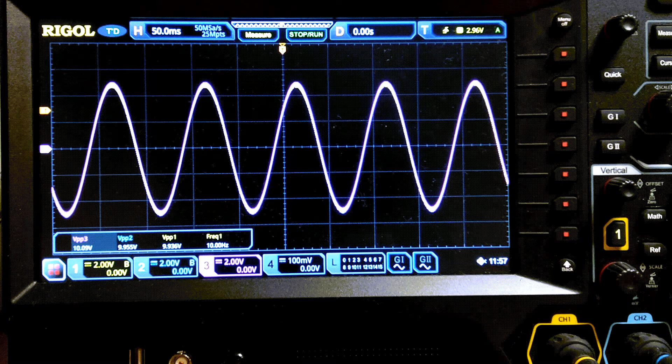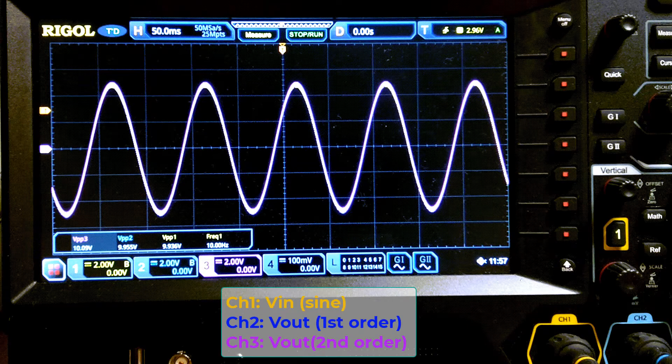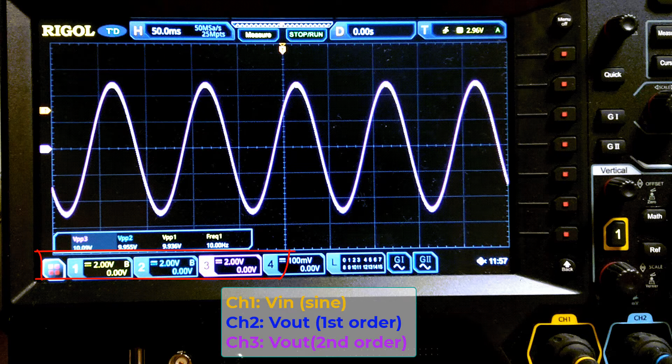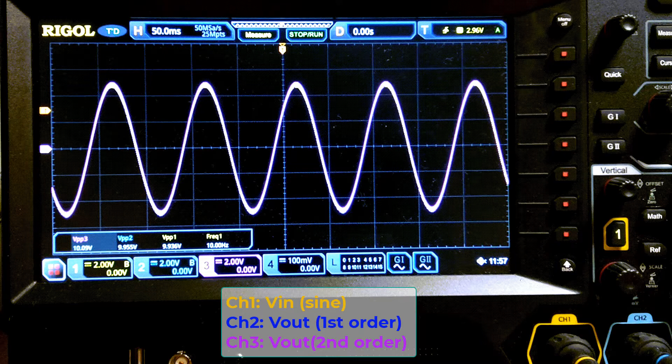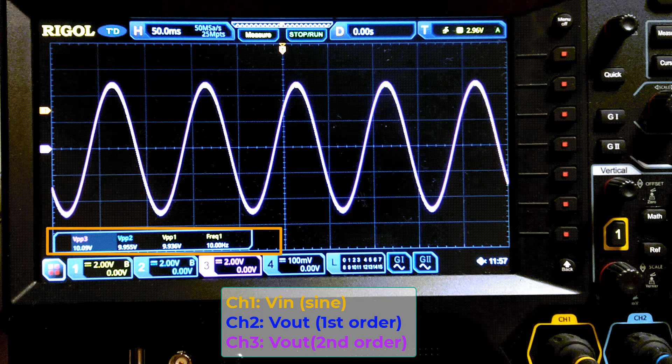Channel 1 is for input sinusoidal voltage. The peak-to-peak voltage is 10V. I will gradually increase the frequency. Channel 2 is the output at the first-order low-pass filter. Channel 3 is the output at the second-order low-pass filter. All channels are at 2V per division in the beginning. The measurements shown on the screen give the frequency of channel 1 and the peak-to-peak voltage on each channel.